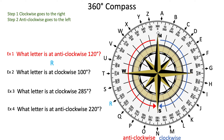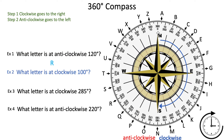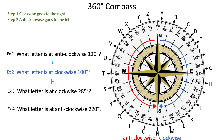Let's move our mouse back to zero degrees and read the next example: what letter is at clockwise 100 degrees? We're going clockwise — going to the right — which means we use the outer numbers. Start counting up: 0, 10, 20, 30, and so forth, until we get to 90 and then 100 degrees. Our answer is letter H.